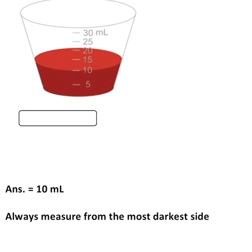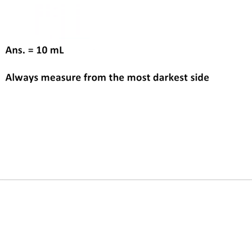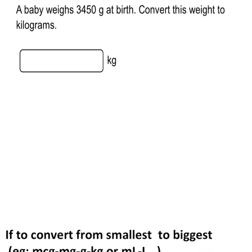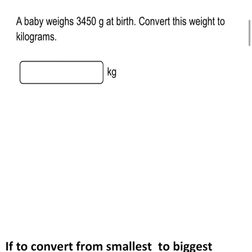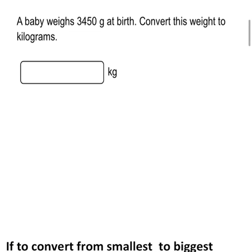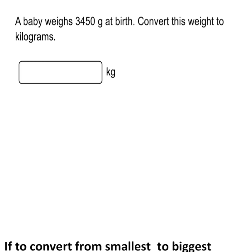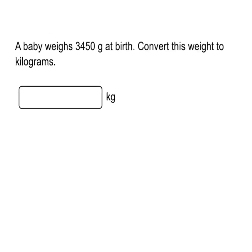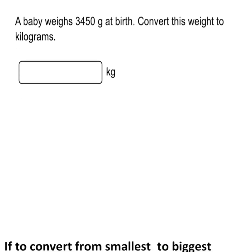Our third question says a baby weighs 3450 grams at birth and we are to convert this weight to kilograms. Notice that the units have already been provided in this question, unlike the first two questions where we had to provide units ourselves. When the unit is already provided in the question, you do not add any unit to your final answer.